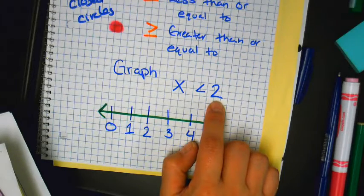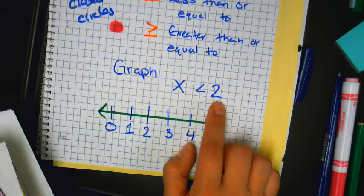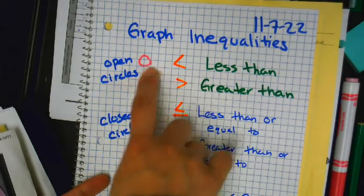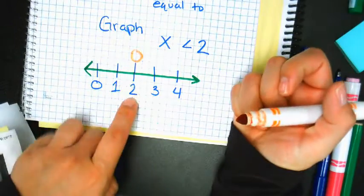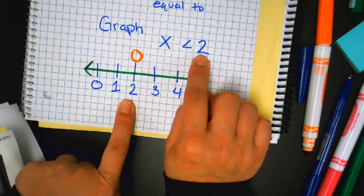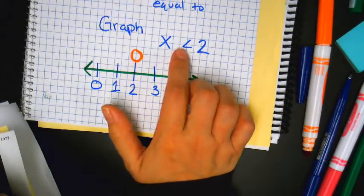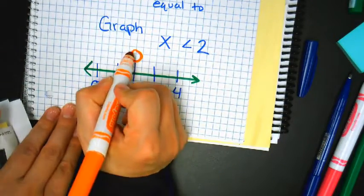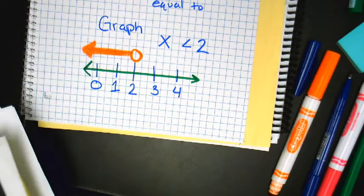The number one thing you can get wrong is: is it an open circle or is it a closed circle? This symbol is less than, so you go to your chart — that symbol gets an open circle, and I'll tell you why it's open in a second. We're going to put an open circle on the two. In which direction do I shade? In which direction are the numbers less than 2? On the left.